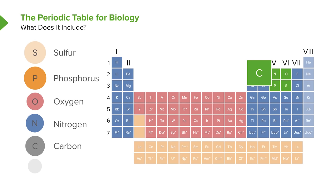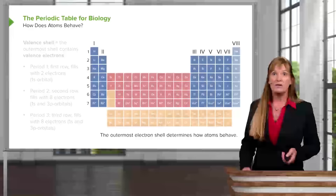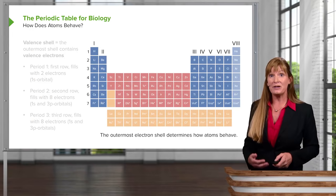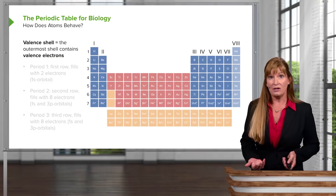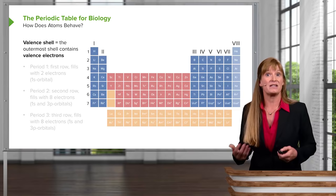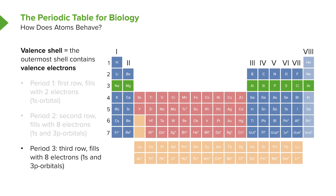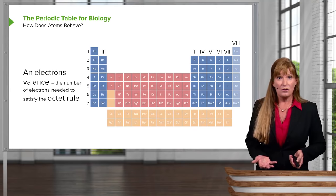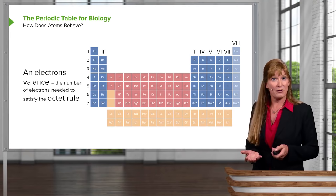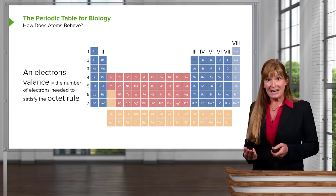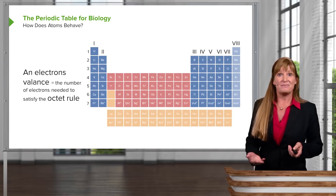In order to consider bonding arrangements, we're mostly concerned with the outermost shell — we call this the valence shell. The number of electrons in the valence shell is how many valence electrons we have. The first shell can carry two electrons, illustrated in period one. Period two shows the second shell can be filled with eight electrons, and period three also with eight. In order to fulfill the octet rule, an atom is looking to have eight electrons in its outermost shell. How many electrons that an atom would like to have is considered to be its valence — it's how many electrons an atom would need to satisfy the octet rule.